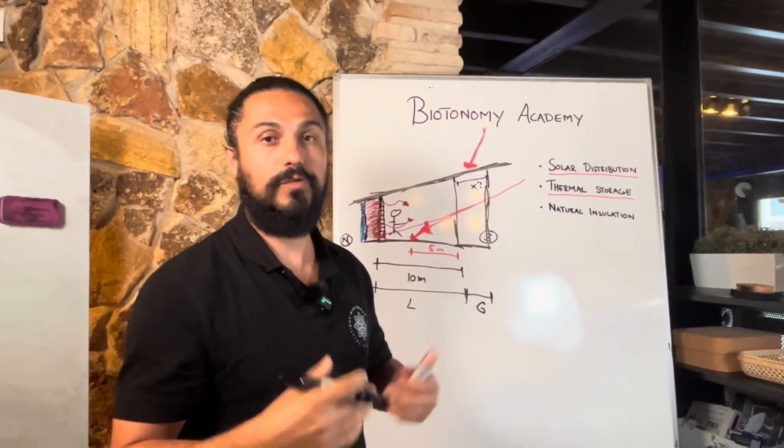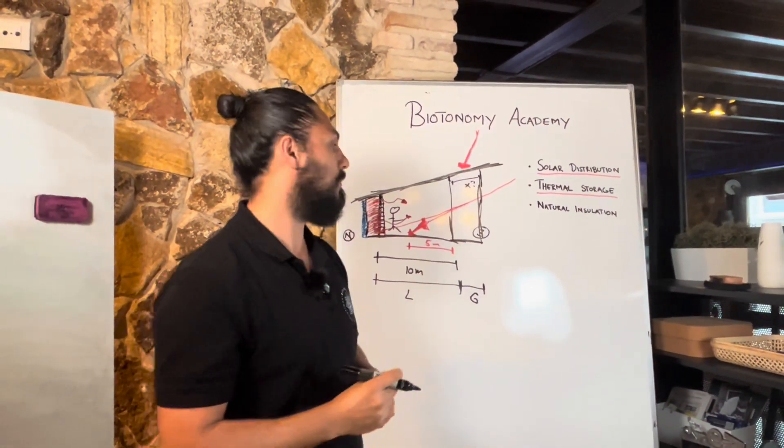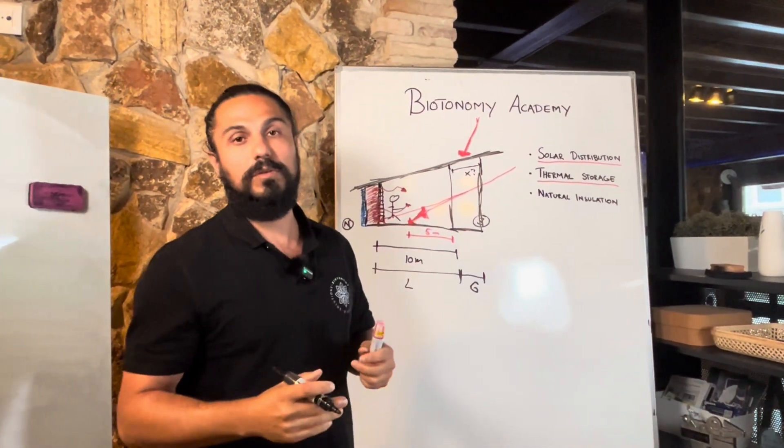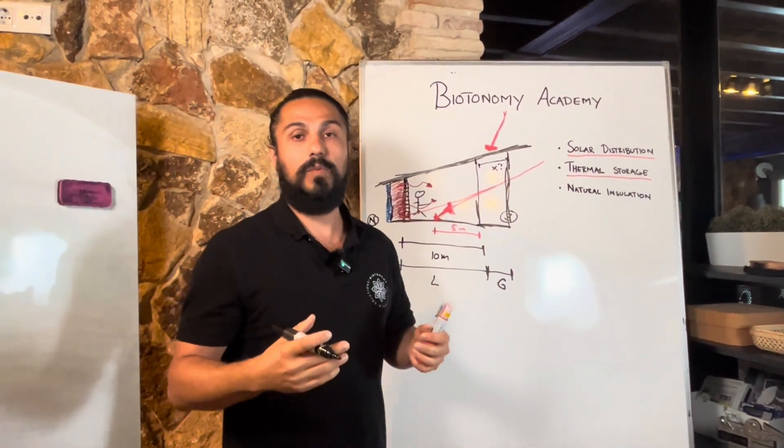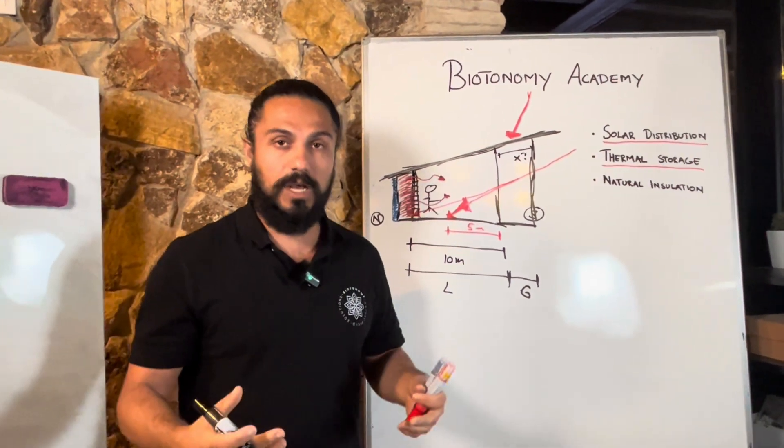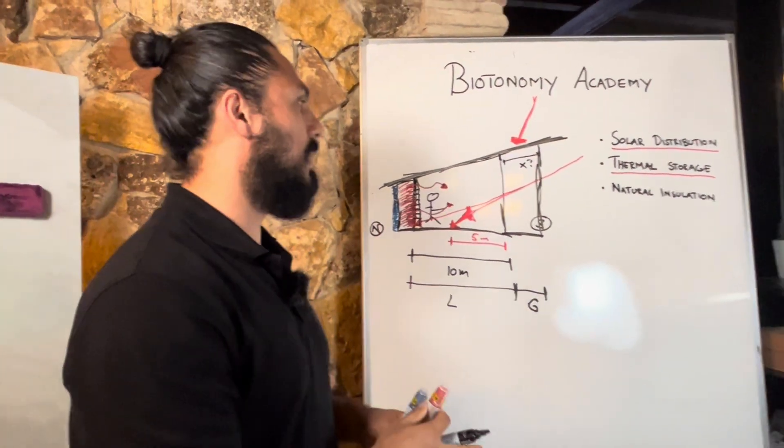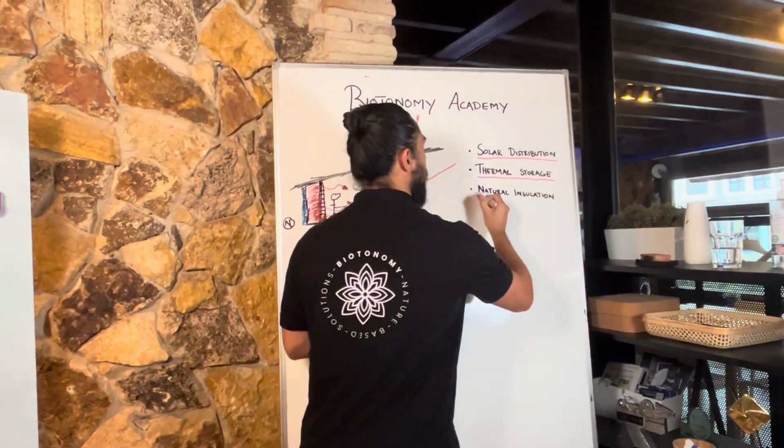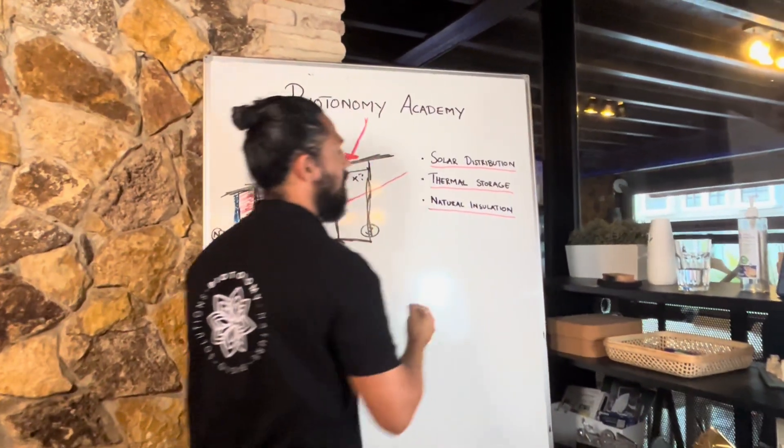So inside this greenhouse we produce food, fruits and vegetables all year round, but this greenhouse has a fundamental effect when it comes to reducing your heat loss. So this is the aspect of creating a natural insulation, so another word for this is a buffered zone.